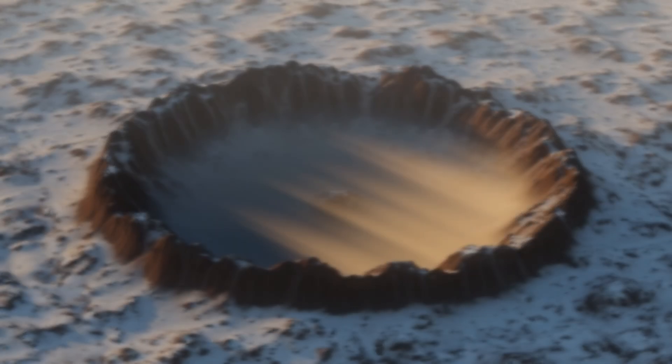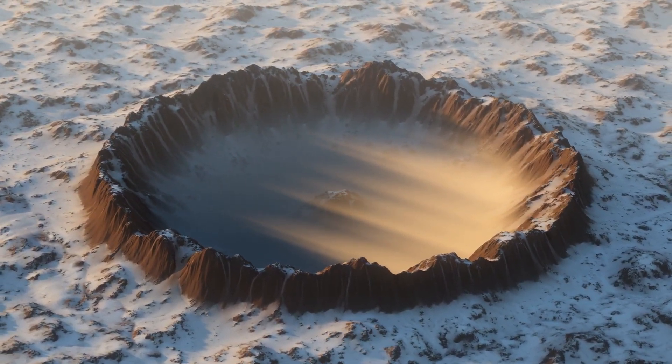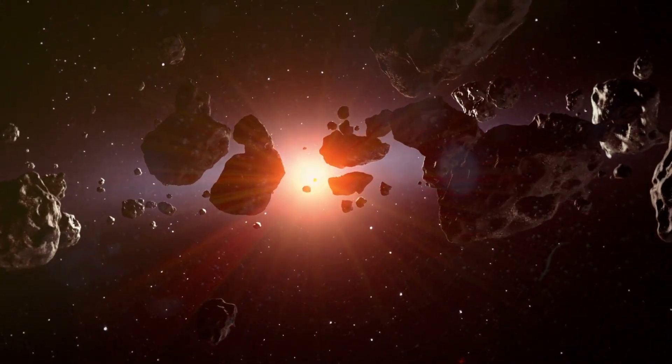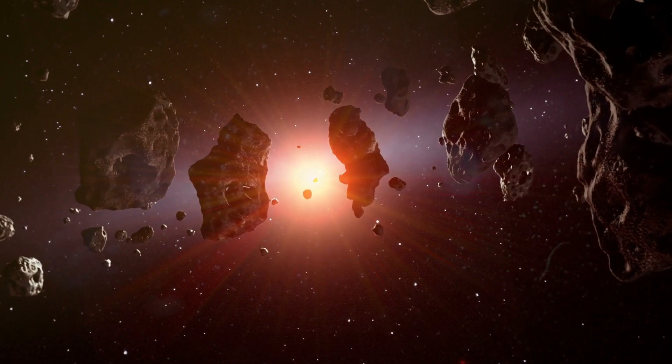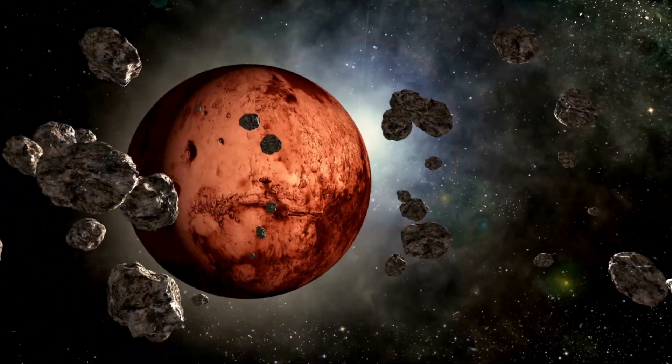The clusters in the cooler areas of the solar system were largely formed of ice, liquids, and gases. Closer to the sun, all the rocky material combined to form the inner planets such as Mars and Earth.